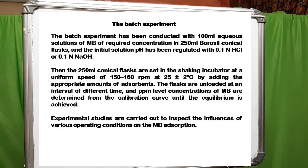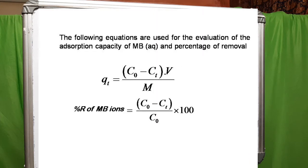The flasks were placed in a shaker and agitated at a constant speed of 150 rpm at 25 degrees centigrade. The flasks were taken out at regular intervals of time and the methylene blue concentrations were measured until equilibrium was reached. The experiments were repeated to investigate the effects of different operating parameters on methylene blue ion adsorption, and the amount adsorbed on the adsorbent was recorded.